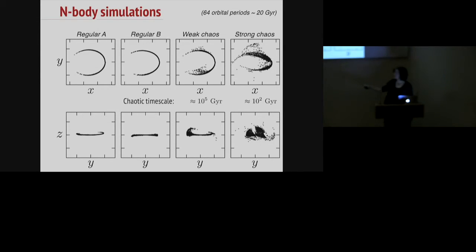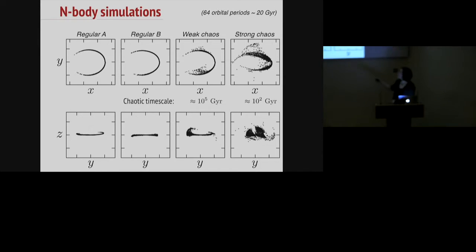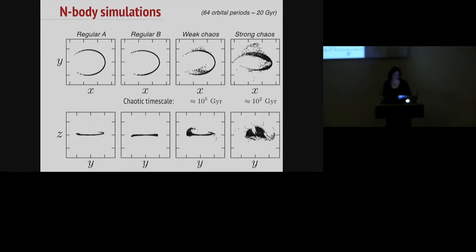He chose orbits that were strictly regular, one that was weakly chaotic with a frequency drift time of 10^5 gigayears — that's 10,000 times the age of the universe — and another with a frequency drift time of 100 gigayears, roughly 10 times the age of the universe. For these orbits he ran a simulation of a disrupting cluster of stars. On the regular orbits, you get beautiful thin streams, as you might expect because the orbital properties are not changing. But even with weak chaos, you can see manifestations of it over 20 gigayears of simulation time — far less than 10^5 gigayears — which intuitively you would not have expected to see at all. And with strong chaos, you see a much stronger manifestation.